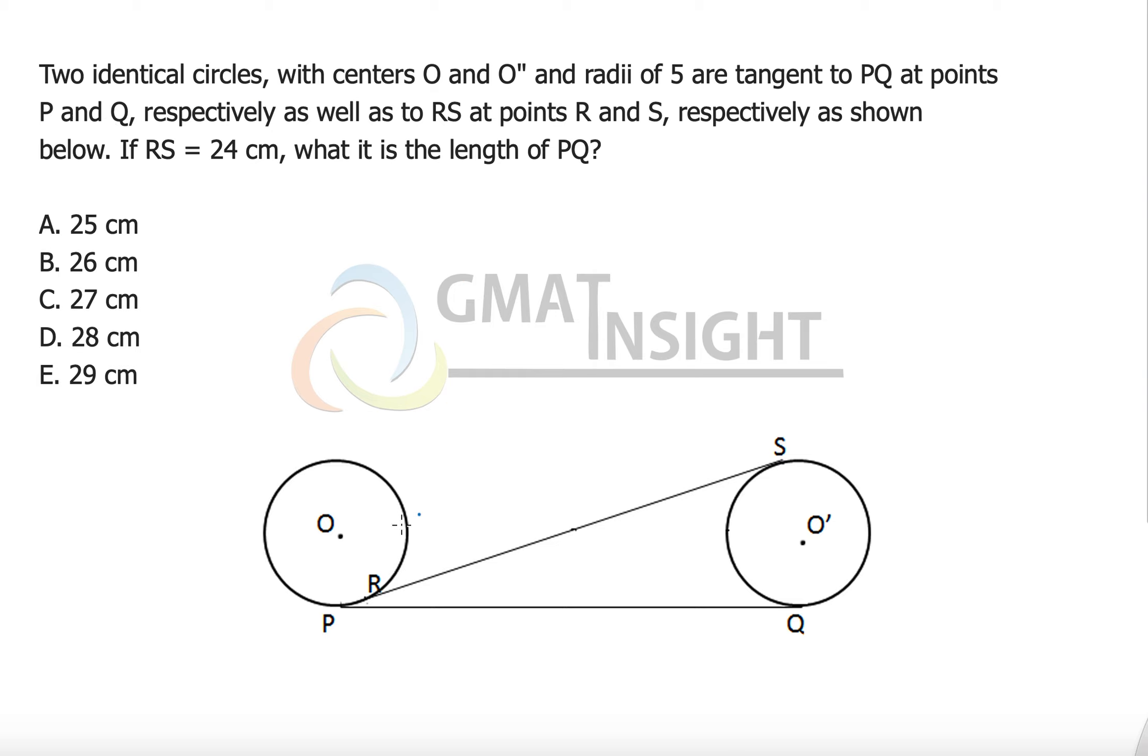Two identical circles with center O and O dash and radii 5, which means they both have the same radius 5, are tangent to PQ at the points P and Q. So PQ is basically the tangent. The first information is that they are tangent and now we are going to apply the very first property which is that when the point of tangency is joined with the center of the circle then it always makes 90 degrees.